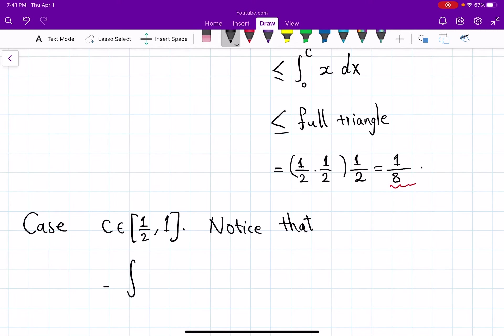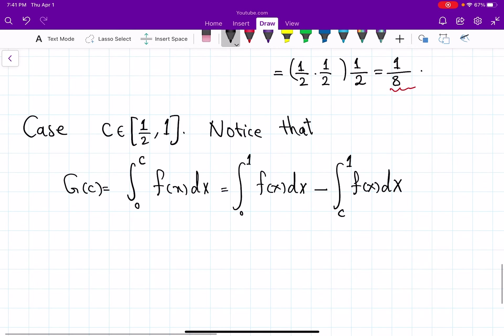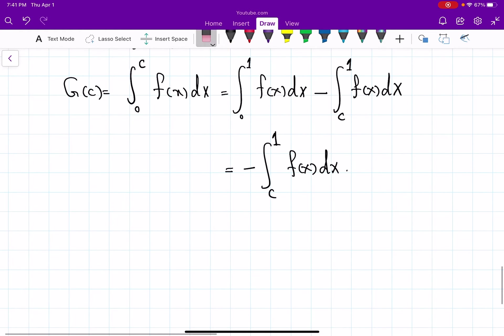Okay, case c is somewhere between one half and one. And here comes the assumption that we haven't used before. Notice that integral, so g(c), which is by definition integral from 0 to c of f(x)dx, is integral from 0 to 1 of f(x)dx minus integral from c to 1 of f(x)dx. But by assumption this integral from 0 to 1 is actually 0, so you get from c to 1 f(x)dx.